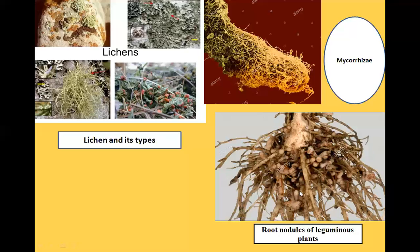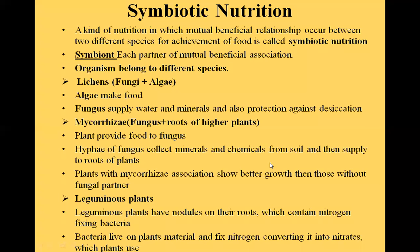The bacteria fix atmospheric nitrogen — N2, which is 78% of our atmosphere. Nitrogen is present in proteins, DNA, and nucleotides, but no other organism can use this atmospheric nitrogen directly. These bacteria convert nitrogen into nitrite and nitrate forms, which are then absorbed by the plant.